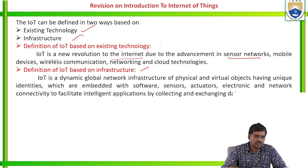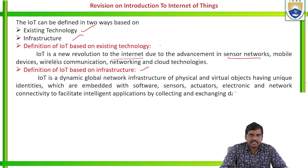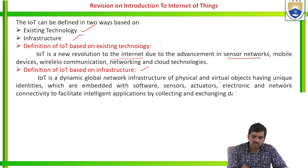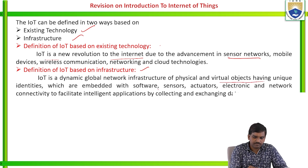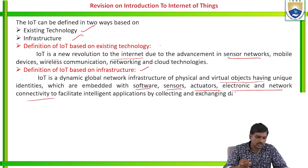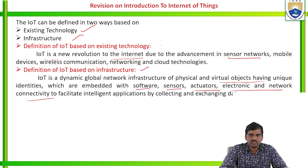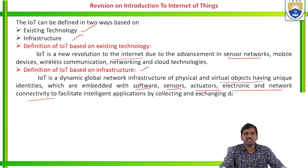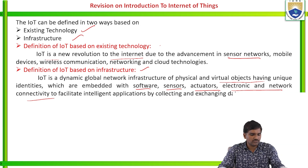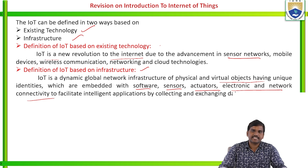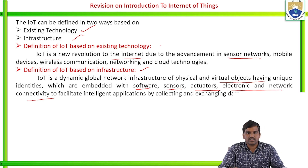Definition of IoT based on infrastructure: It is a dynamic global network infrastructure of physical and virtual objects having unique identities, which are embedded with software, sensors, actuators, electronics and hardware connectivity to facilitate intelligent applications by collecting and exchanging data over the network. These are the two types of definitions based on existing technology and infrastructure.